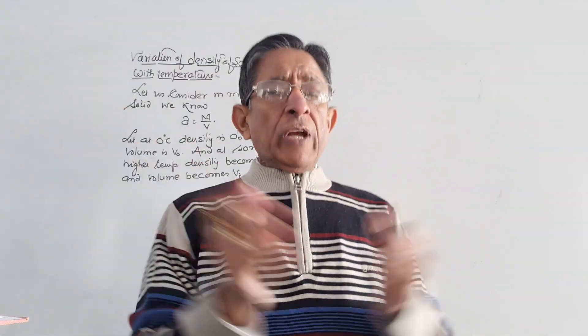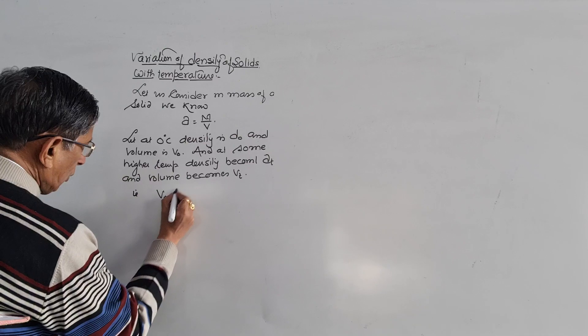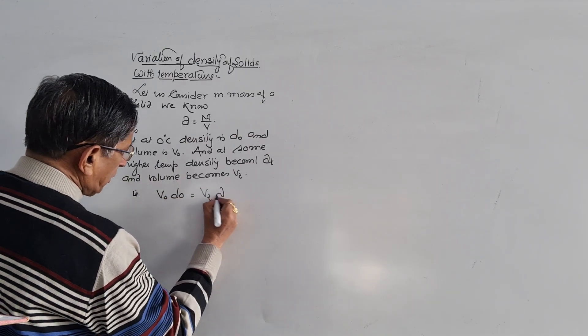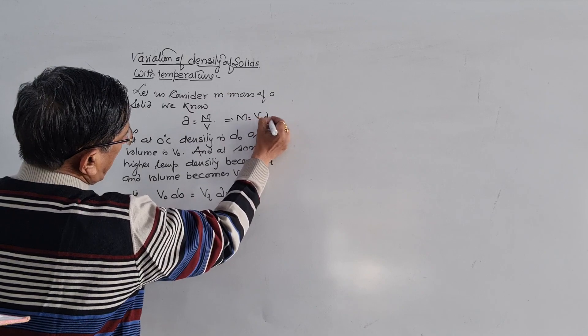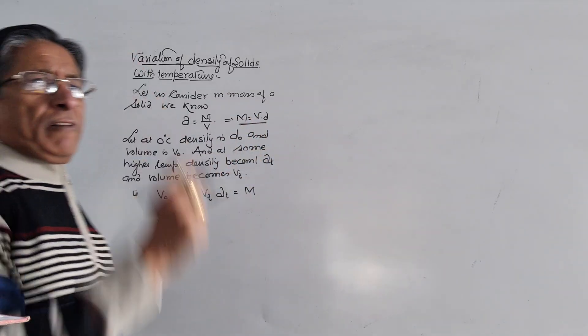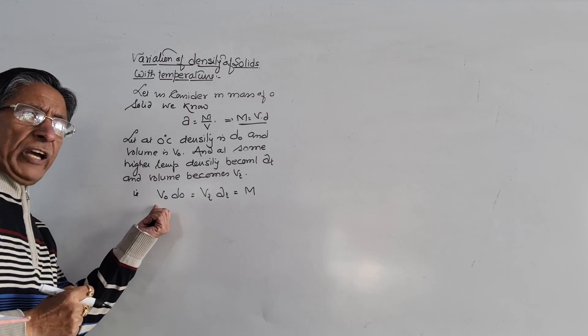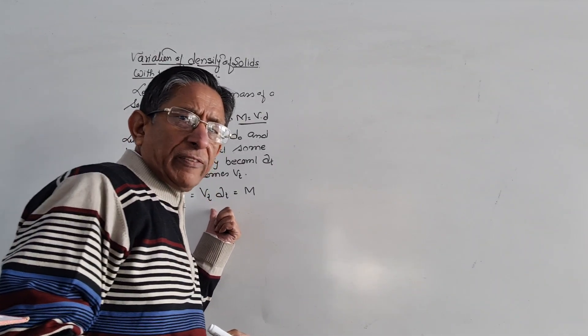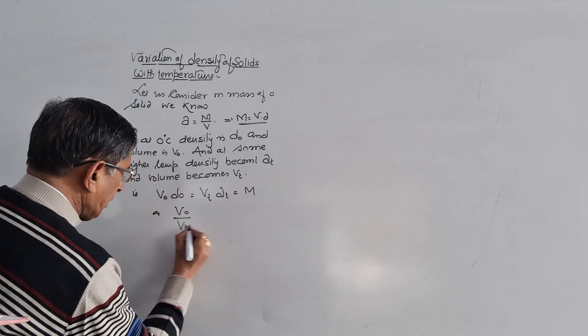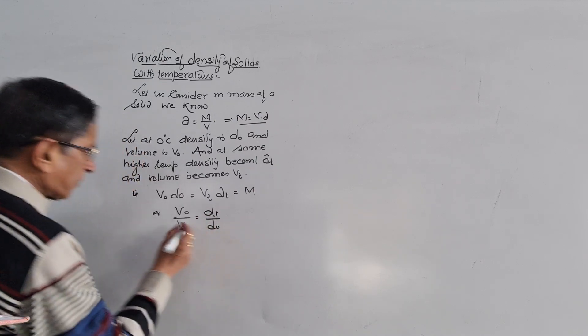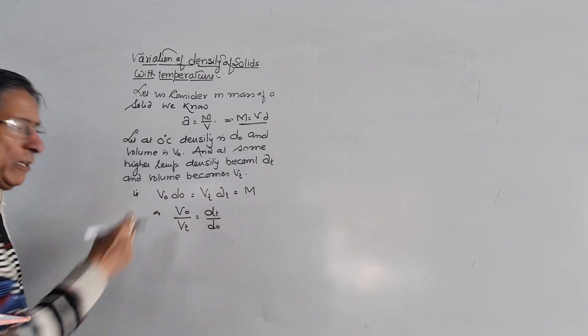But mass of the body remains constant. Mass of the substance always remains constant. Therefore, volume at 0 degree Celsius into density at 0 degree Celsius is equal to volume at T degree Celsius into density at T degree Celsius. Or V0 upon Vt is equal to Dt upon D0.